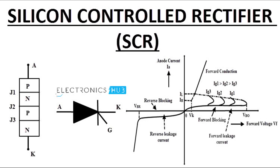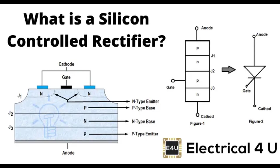Explanation of SCR, silicon-controlled rectifier. A silicon-controlled rectifier, SCR, is a type of semiconductor device that functions as a controlled switch. It is a four-layer solid-state device that controls current. The SCR is a type of thyristor, which is a larger family of semiconductor devices designed to act as bistable switches, conducting when their gate receives a current trigger and continuing to conduct while they are forward-biased.